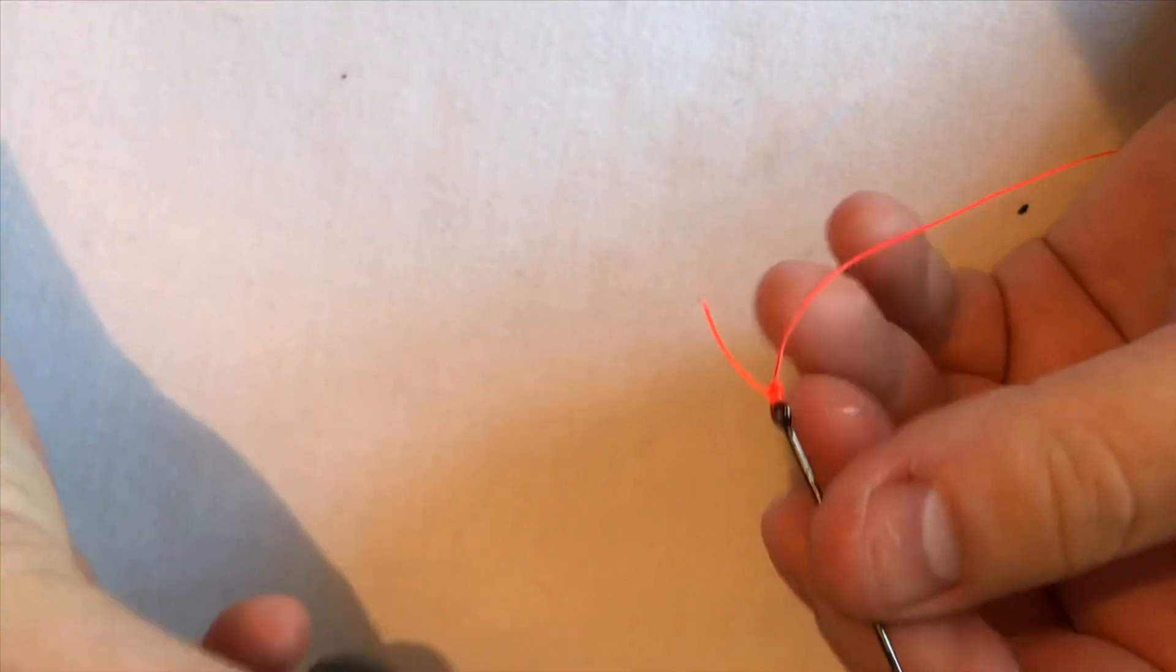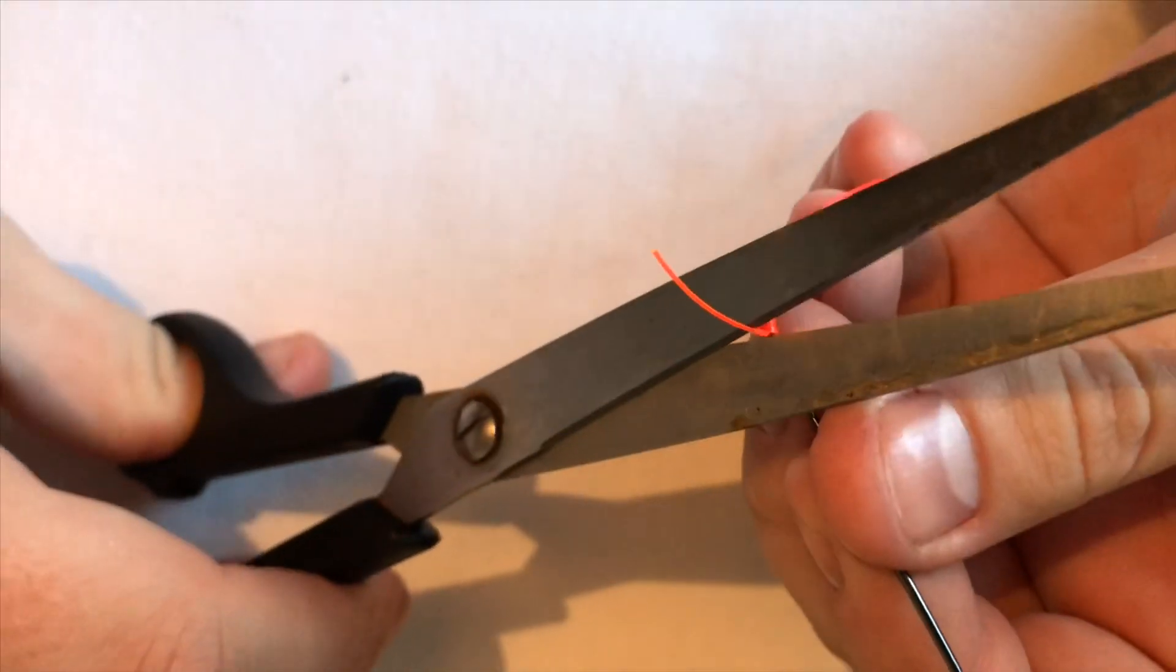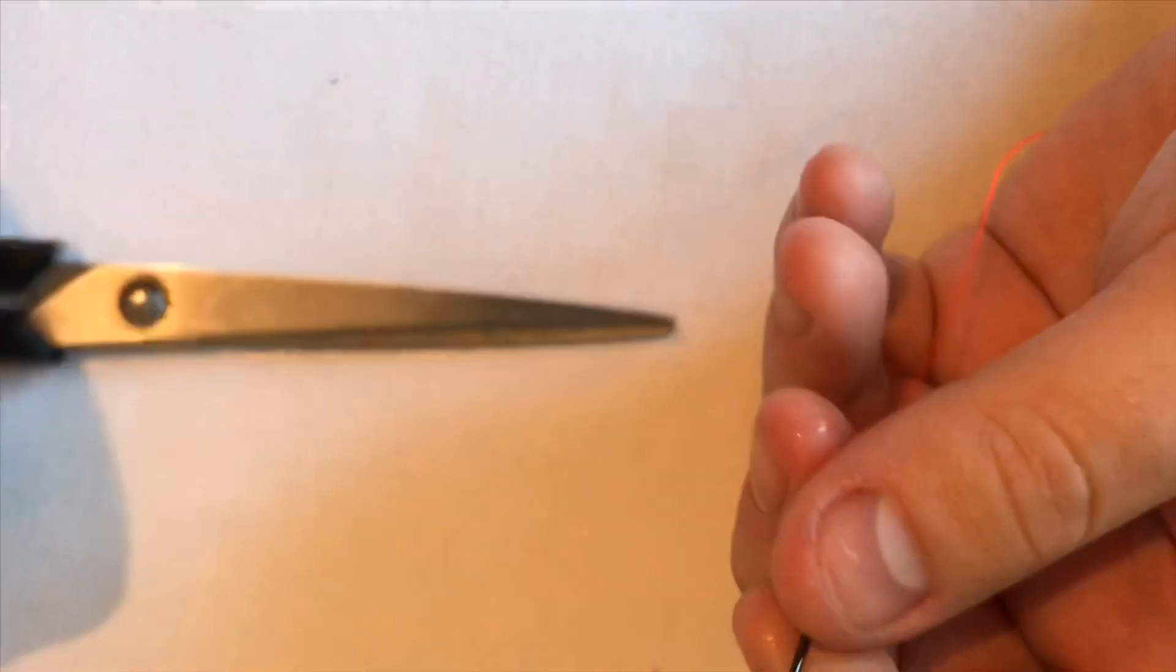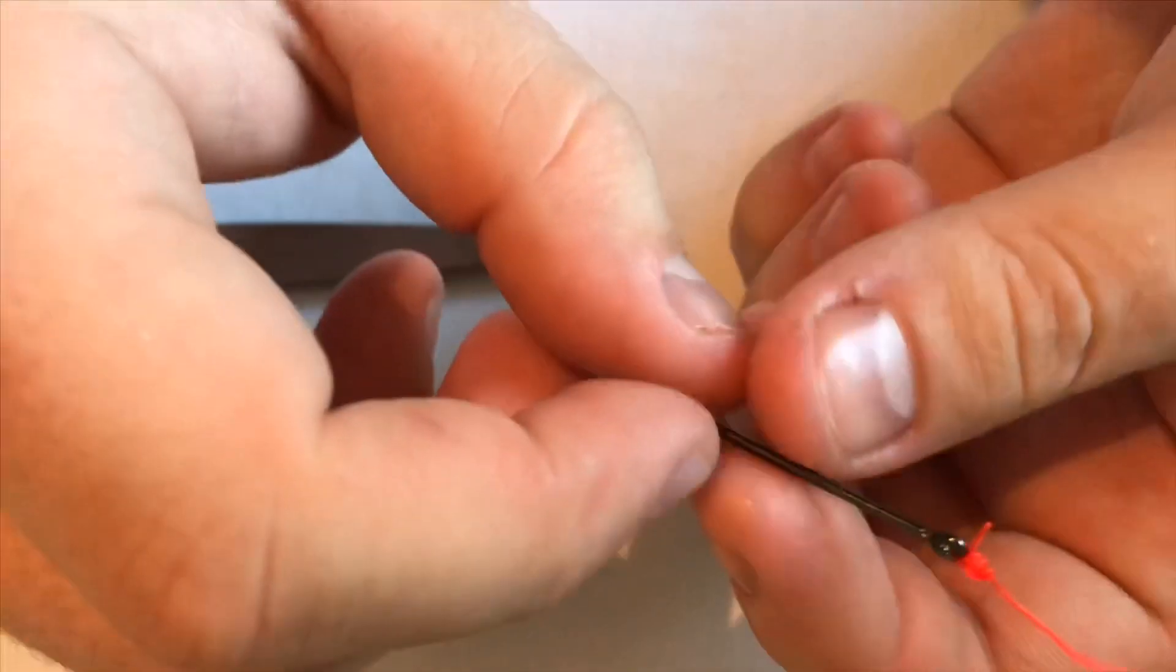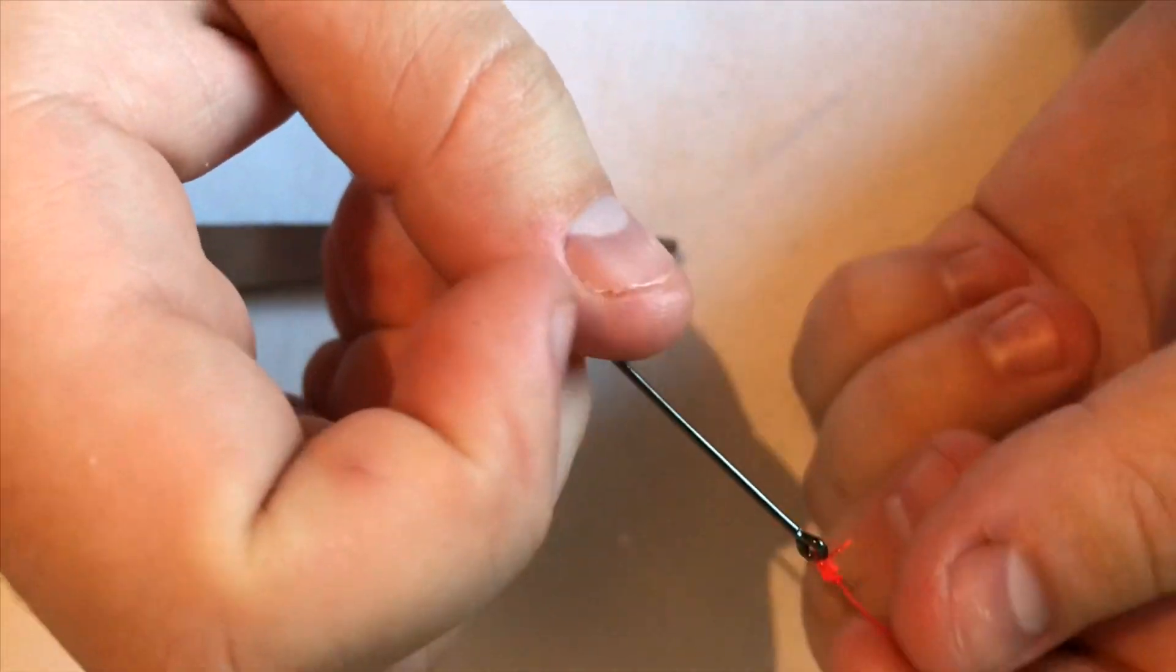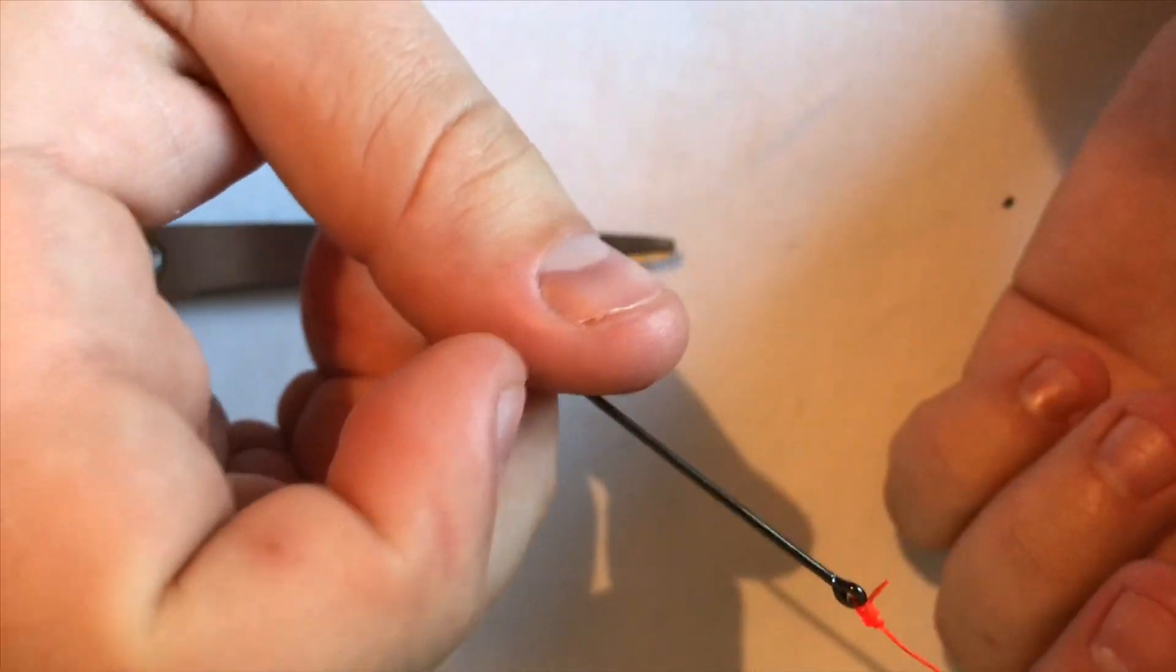Now with this tag end, you want to trim it a bit closer to the hook but leave a gap, or leave a little tag end still, so when the worm pushes over or the bait, it's going to stop it from coming back down the hook. So easy.